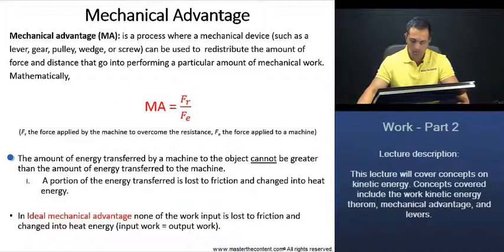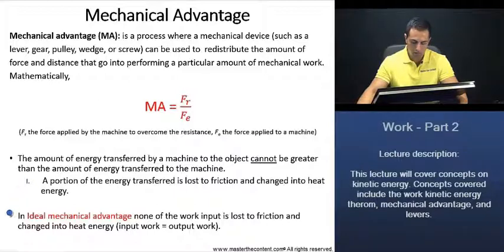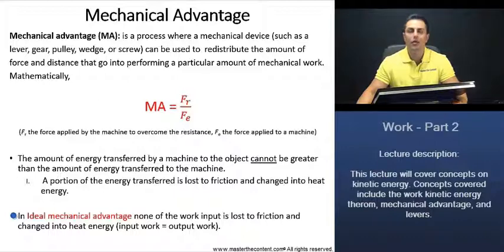Two more points before we move on. The amount of energy transferred by a machine to the object cannot be greater than the amount of energy transferred to the machine — and that makes sense intuitively. A portion of the energy transferred is lost to friction and changed into heat energy. In ideal mechanical advantage, none of the work input is lost to friction, meaning the input work is going to be equivalent to the output work.